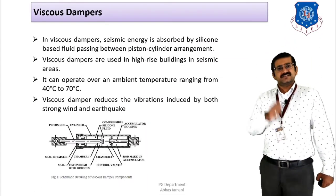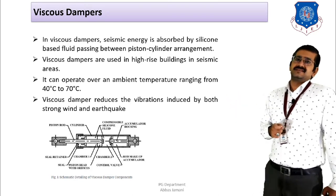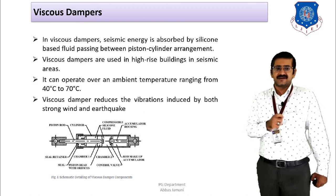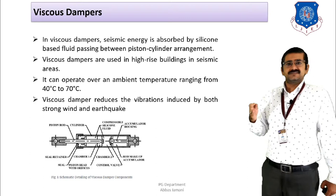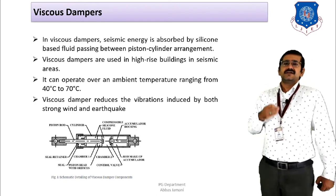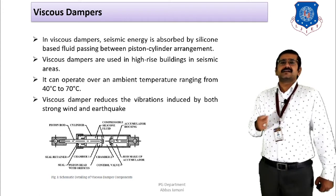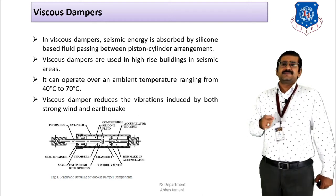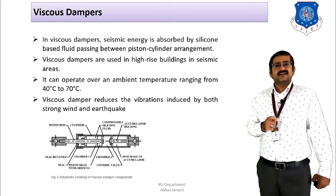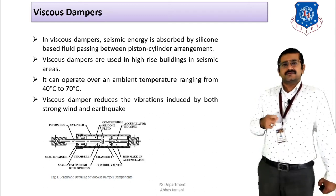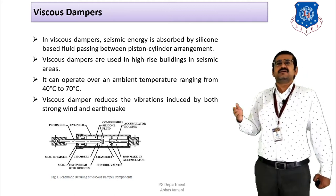Next is the viscous damper, where a viscous material dissipates the energy transferred from seismic base excitation. The seismic energy is absorbed by the silicon-based material located between the piston and the cylinder arrangement. Viscous dampers are widely used in high-rise buildings to increase performance in seismic zones 3, 4, and 5. They can operate at ambient temperatures in the range of 40 to 70 degrees Celsius, useful for buildings in high-temperature zones.